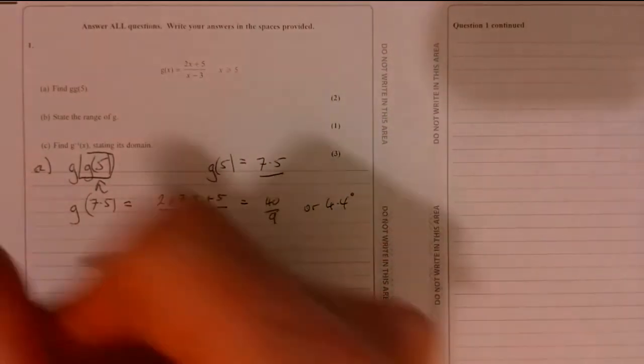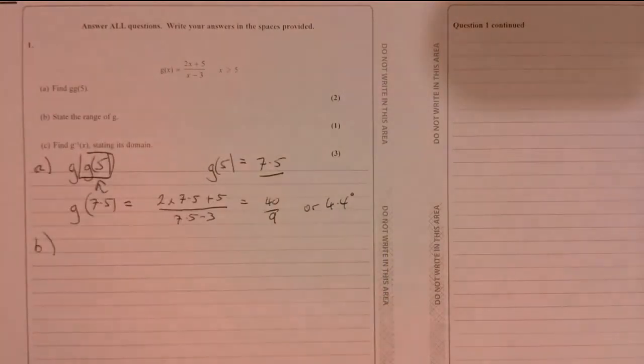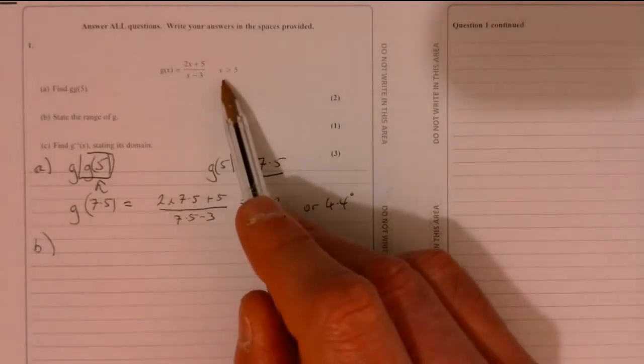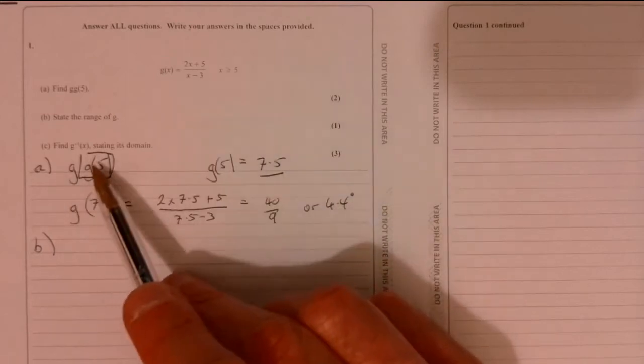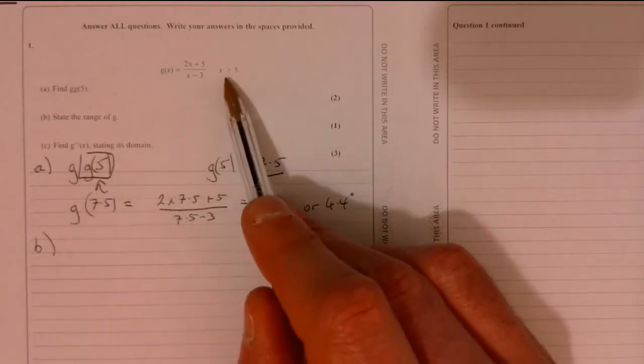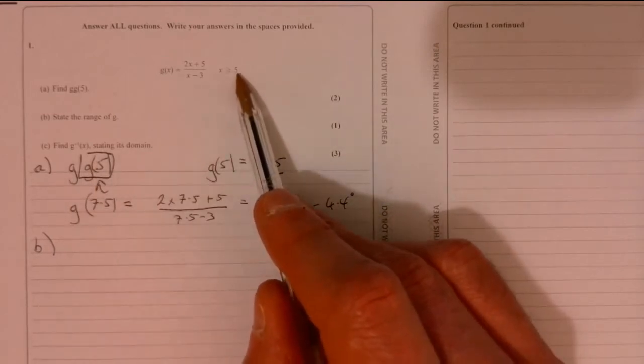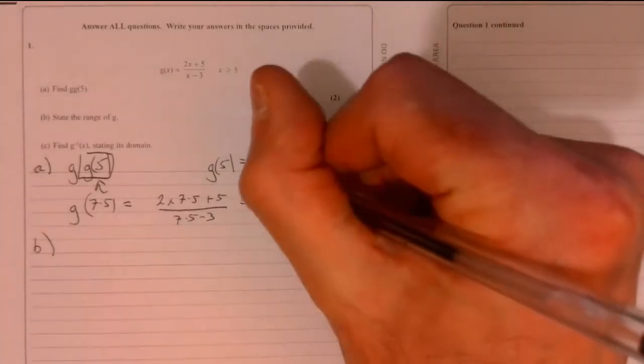So on part B, maybe where things are getting a little bit trickier. Nice two marks to begin with. State the range of possible answers that we could actually get. Now the first thing to bear in mind is think about why it asks us to do this five to start off with. X has to be more than or equal to five. So actually, this 7.5 is quite significant.